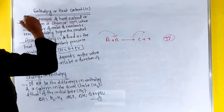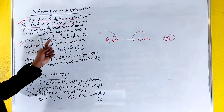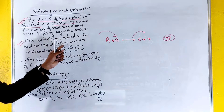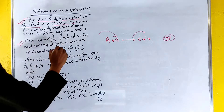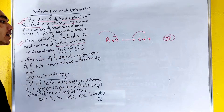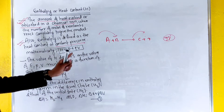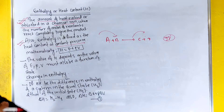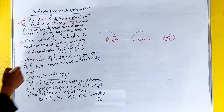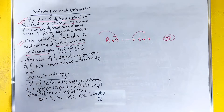We can define enthalpy as heat content at constant pressure. The value of delta H is equal to E plus PV. We have this formula that we need to prove mathematically.